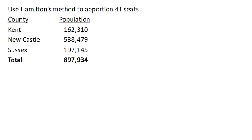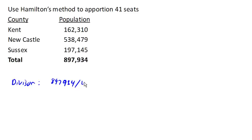Step one is to find what's called the divisor. The divisor is simply the number of people that each representative should be representing. To figure that out, we take our total population — 897,934 — and divide that by the number of seats. That gives us 21,900 (keep a bunch of decimals for calculations). This is people per representative.